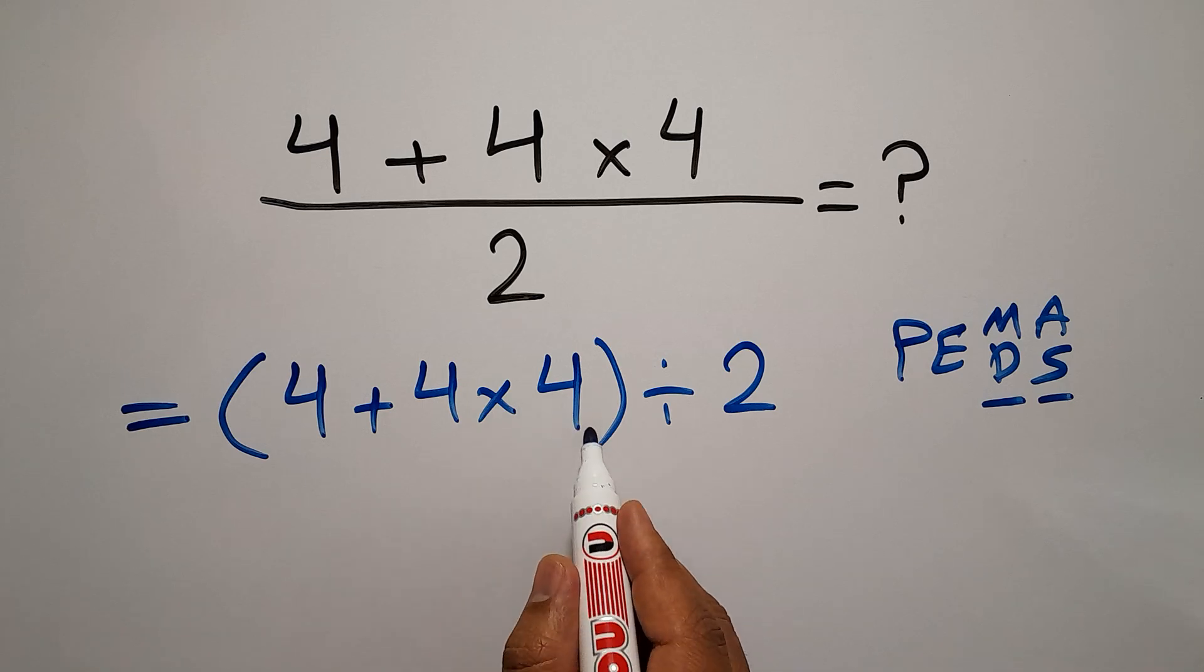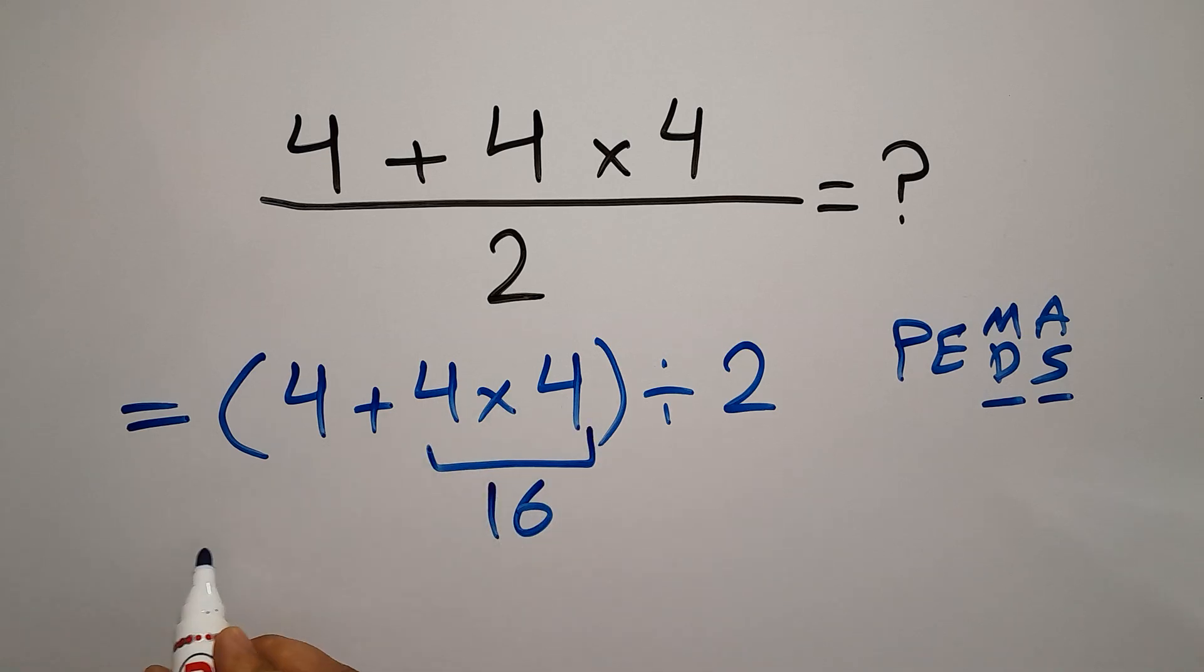So we have parentheses 4 plus 16, divided by 2. 4 plus 16 equals 20.